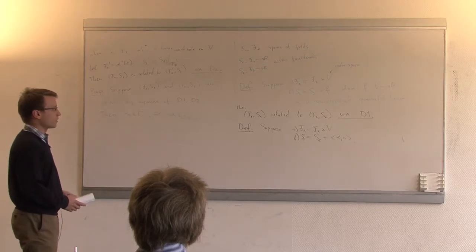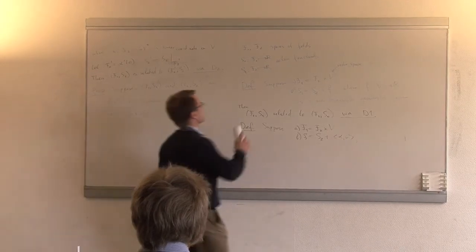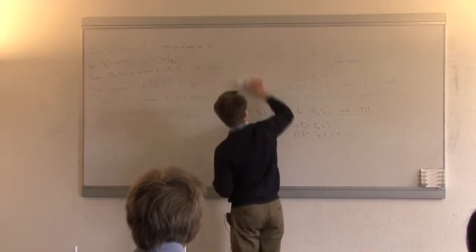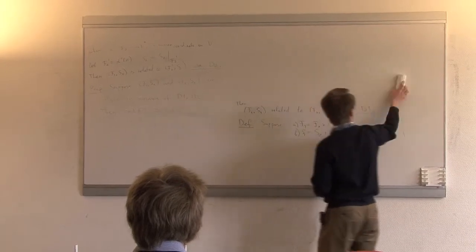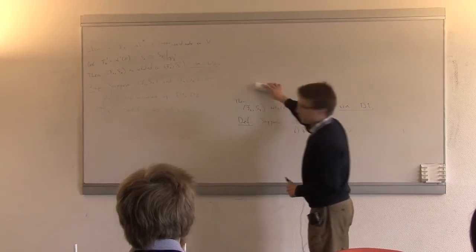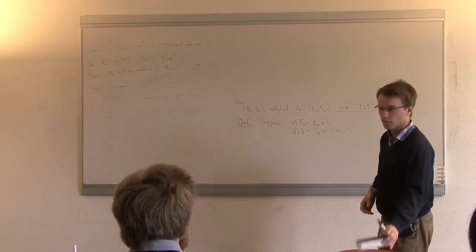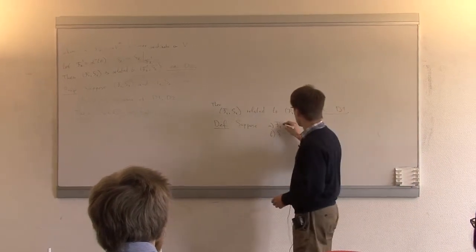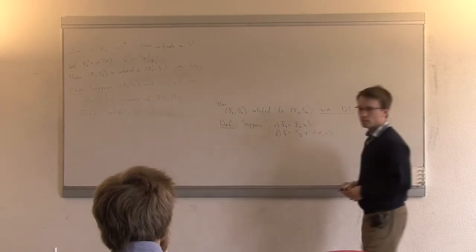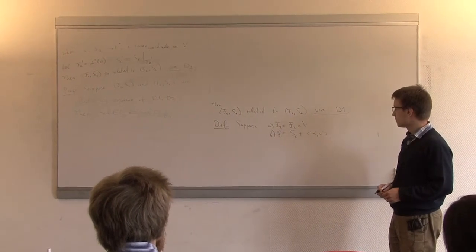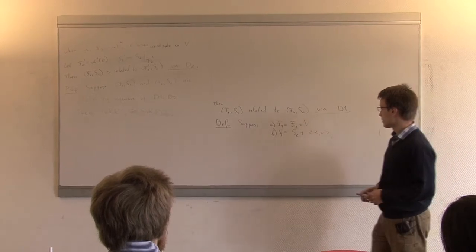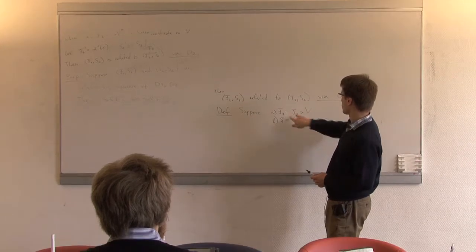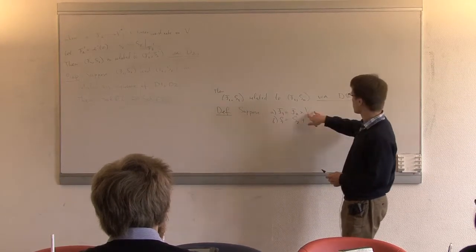Now let me give one more transformation, D3, which has a quantum rather than classical origin. Note that when we say F1 equals F2 times V, this is up to isomorphism. So S1 is a function of F1; you put it on F2 cross V, and S2 is a function of F2, while alpha comma V is a function of V.